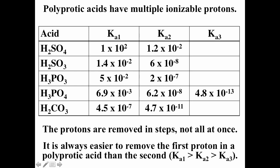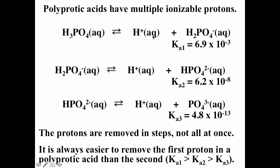Here's a table with Ka1, Ka2, and Ka3 for some acids. For phosphoric acid: Ka1 = 6.9 × 10⁻³, Ka2 = 6.2 × 10⁻⁸, and Ka3 = 4.8 × 10⁻¹³. The first reaction — equilibrium constant Ka1 — removes the first H⁺, going from H₃PO₄ to H₂PO₄⁻. The second reaction — Ka2 — removes the second H⁺, going from H₂PO₄⁻ to HPO₄²⁻. The third reaction — Ka3 — removes the third H⁺ from HPO₄²⁻. Ka1 is always larger than Ka2, which is always larger than Ka3, because it's always easiest to rip off that first H⁺.